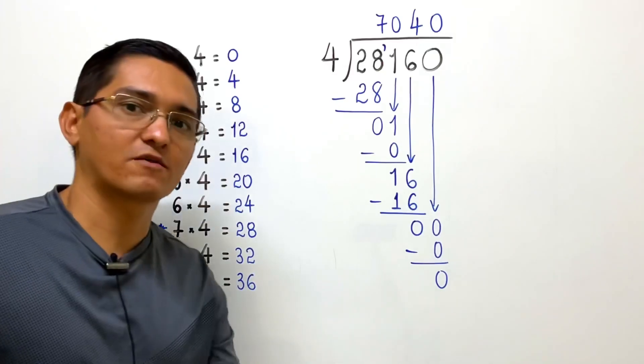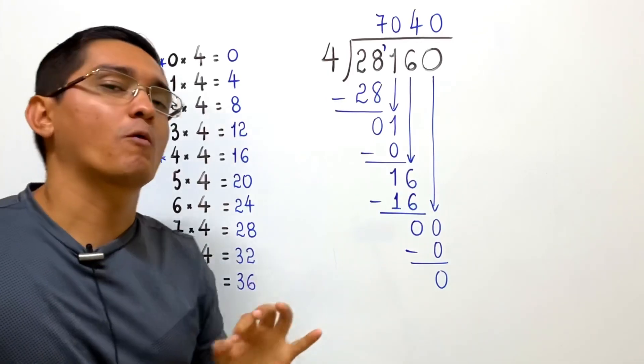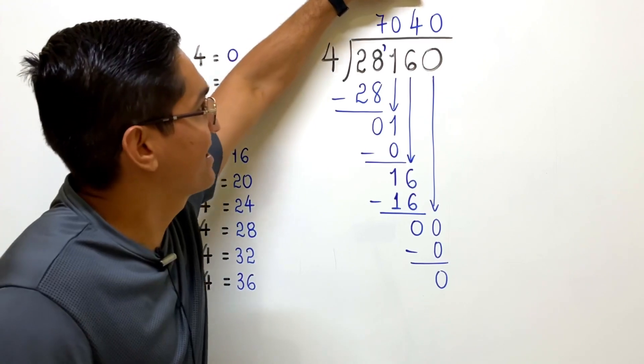Okay, so what is our result? When dividing 28,160 in 4 equal parts, each one of them has value of 7,040.